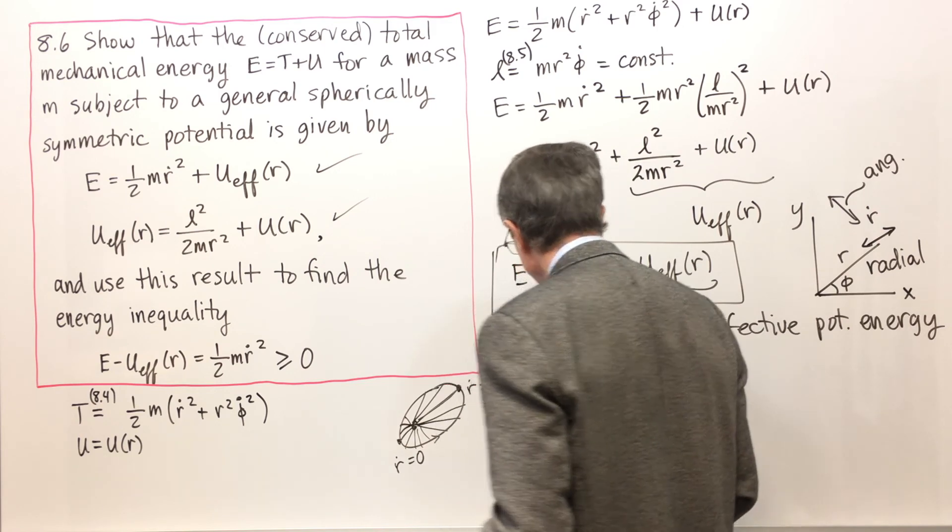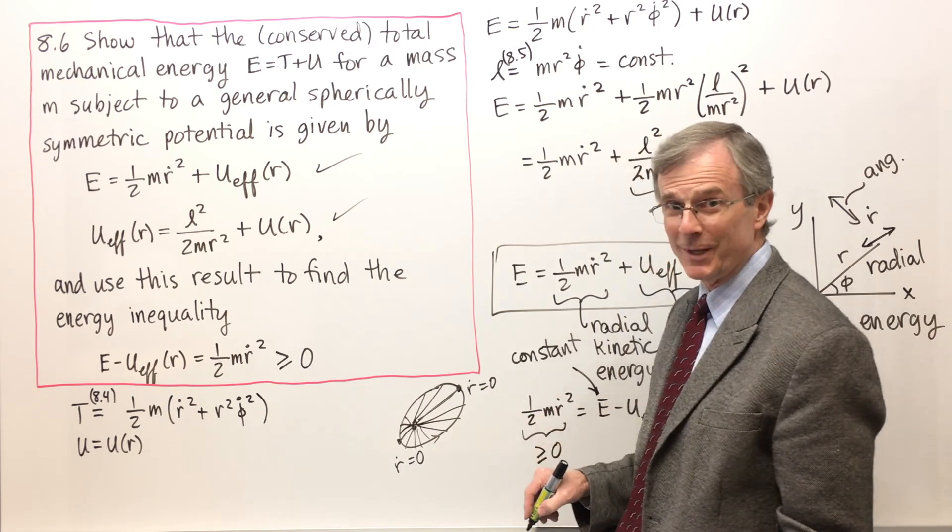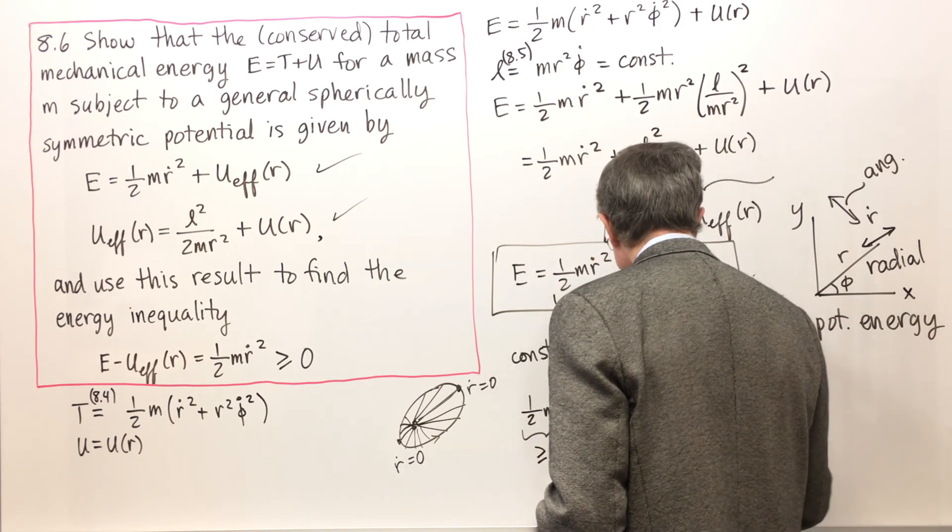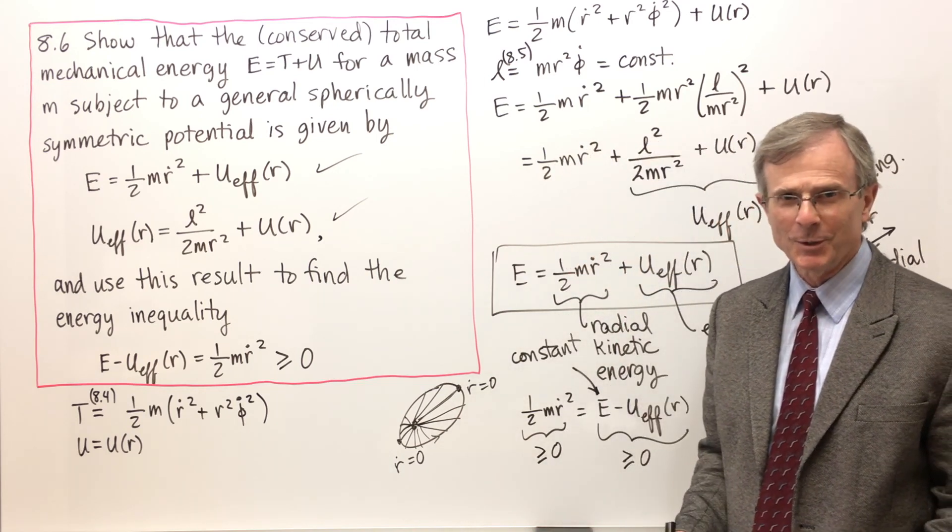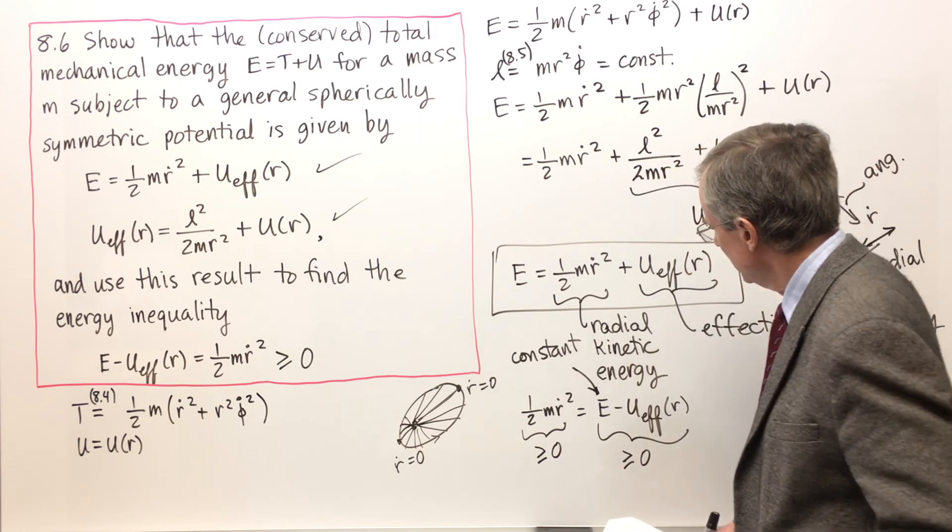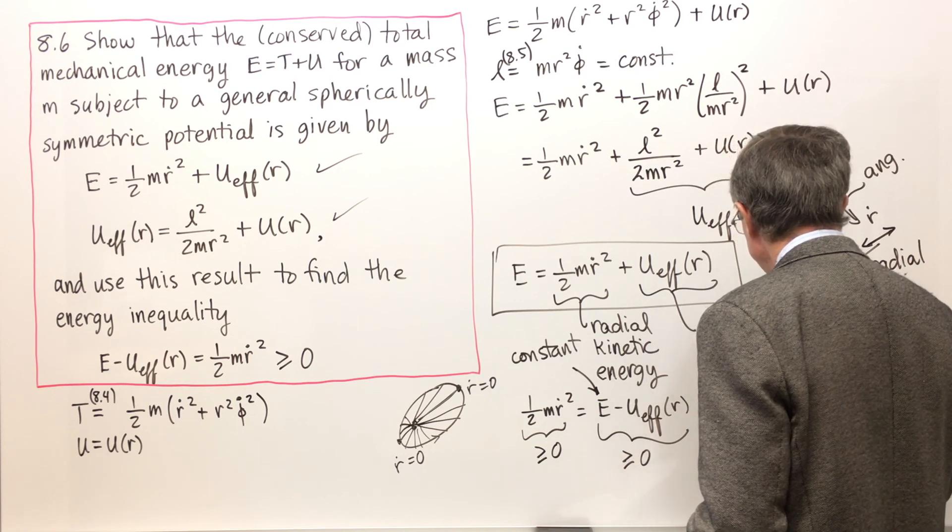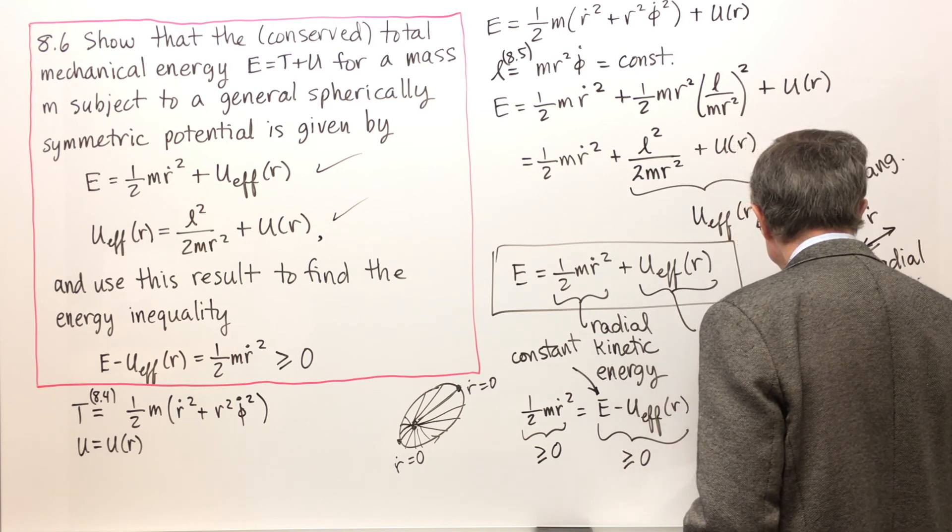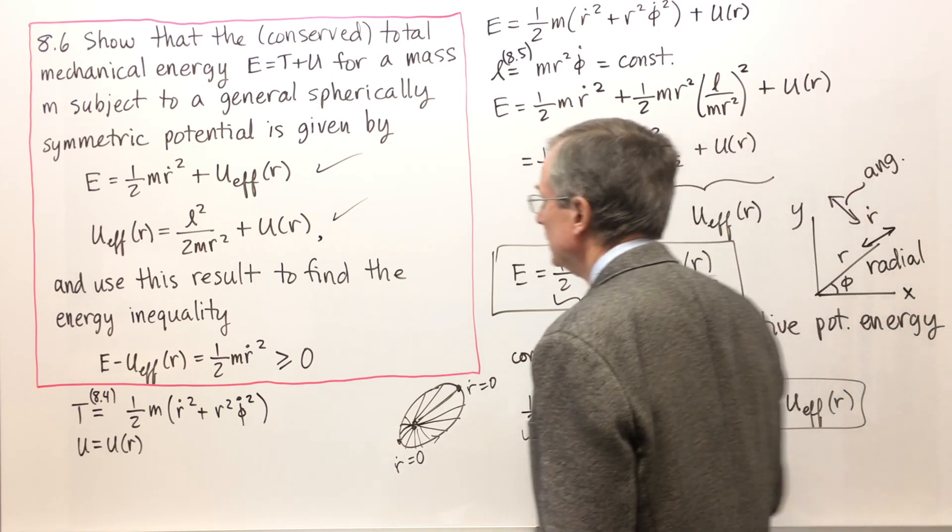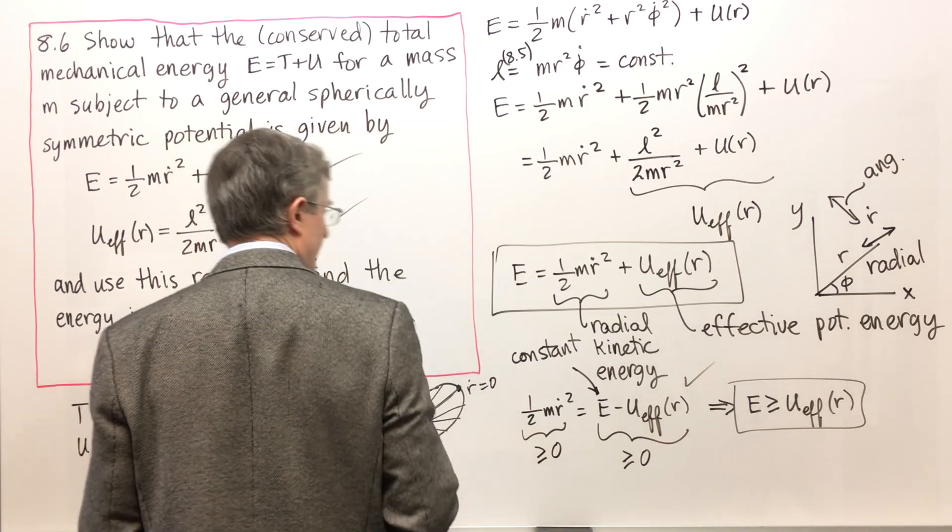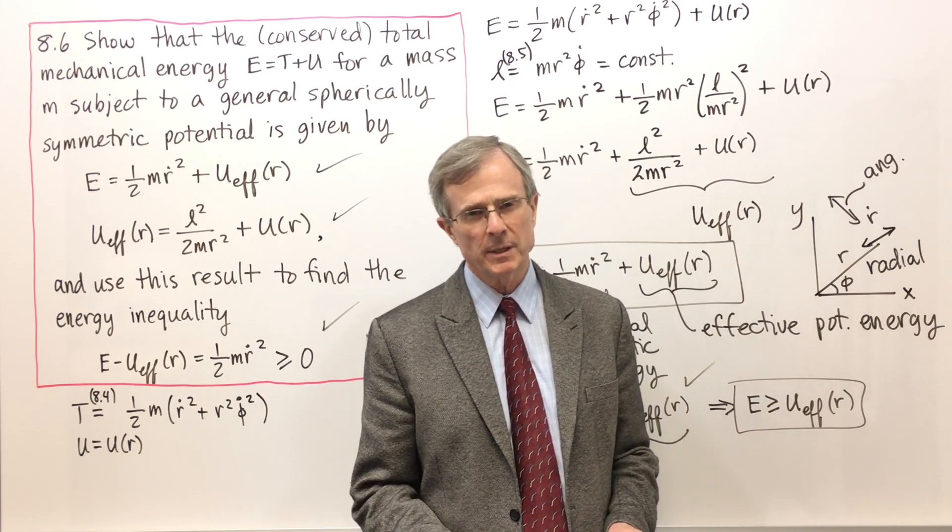But anyway R dot could be zero, R dot could be negative, but one-half m R dot squared has got to be greater than or equal to zero, could be zero or positive. If the left side of the equation is greater than or equal to zero then the right side of the equation had darn well better be greater than or equal to zero or else something really wicked is happening. So that implies that the energy is greater than or equal to the effective potential and we'll take advantage of this to study different shapes of orbits of planetary orbits.